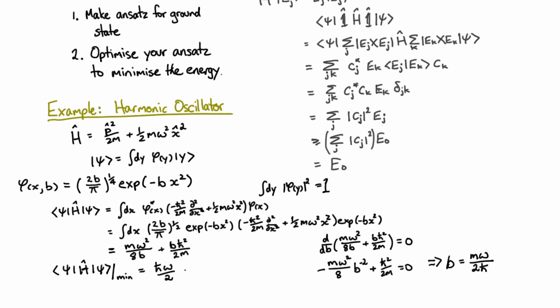If we plug that back into here, we get h bar omega on 2, which is the exact result. What do I mean by the exact result? That's not just an upper bound for the ground state energy - it's the actual ground state energy. So it's the least upper bound, the final result. Why did that happen? That happened because I was so clever I tried a Gaussian. And in fact, the ground state of the harmonic oscillator is exactly a Gaussian.